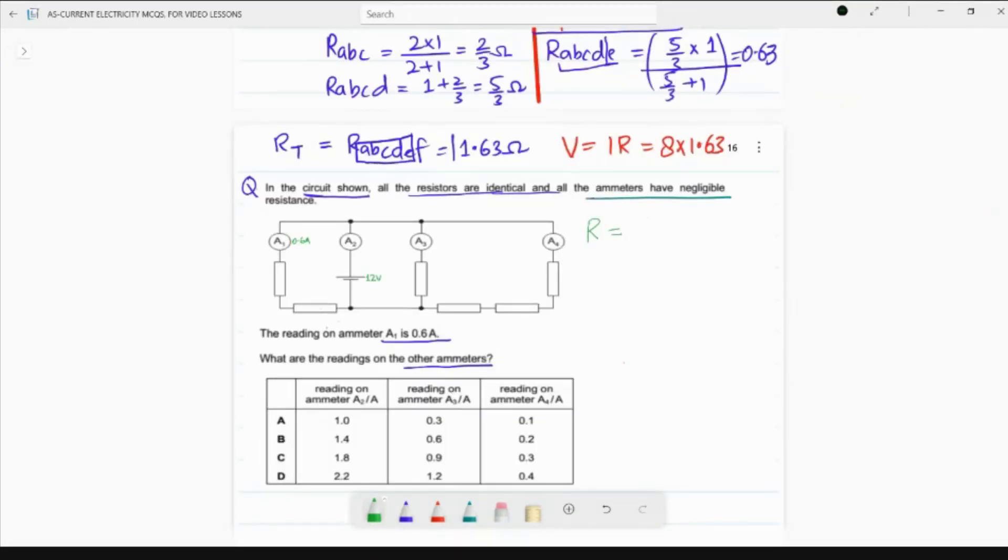I need R equals V divided by I. So V is 12 volt divided by current is 0.6, so it means it would be 20 ohm. So if total resistance of these two is 20 ohm, it means R1 is 10 ohm and R2 is 10 ohm.